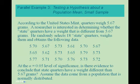Next, let's test a hypothesis about a population mean with a small sample. According to the U.S. Mint, quarters weigh 5.67 grams. A researcher wants to determine whether state quarters have a different weight. He randomly selects 18 state quarters and weighs them. At the alpha equal 0.05 level of significance, is there evidence the mean weight differs from 5.67 grams? The data come from a normally distributed population, so we can proceed despite the small sample size.